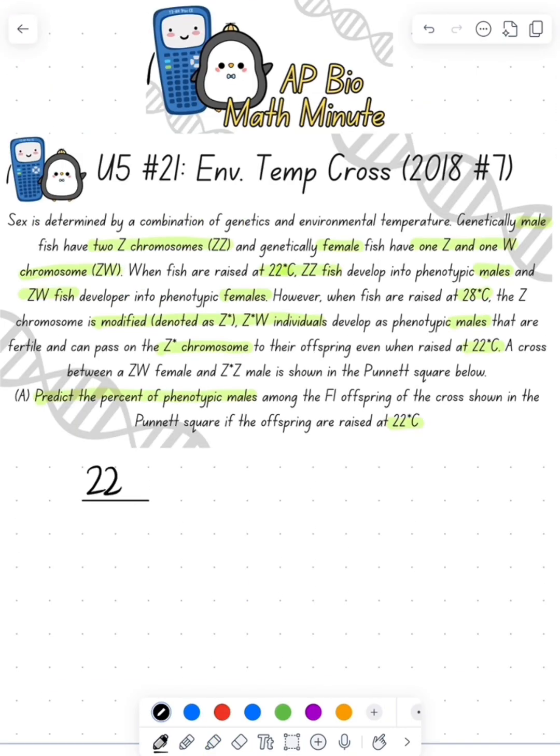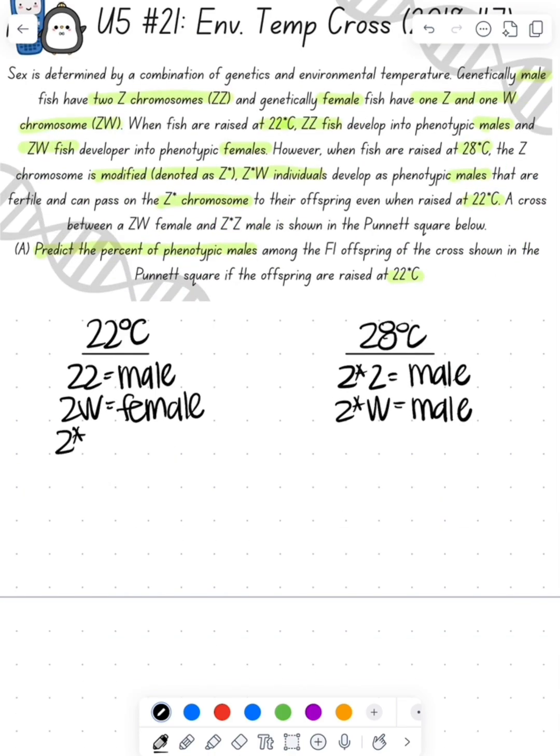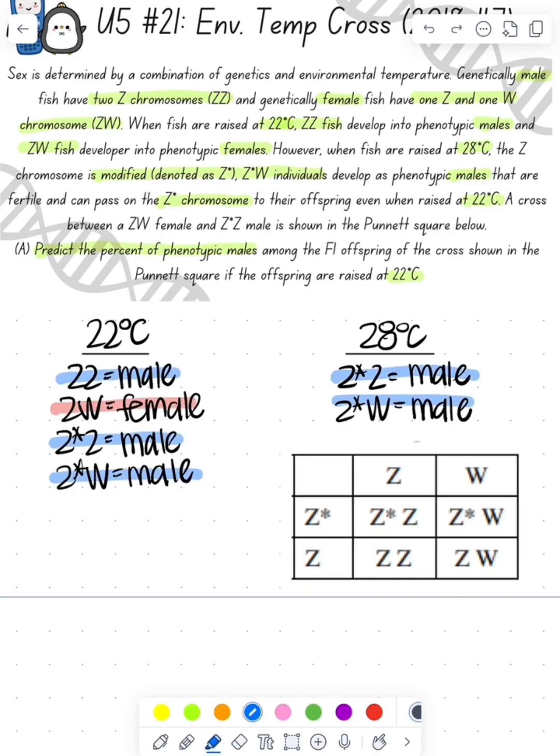At 22 degrees, we're going to see the ZZ as being a male and the ZW as a female. At 28 degrees, we see a Z* being a male and the Z*W is also a male. So that Z* is going to always make it a male.